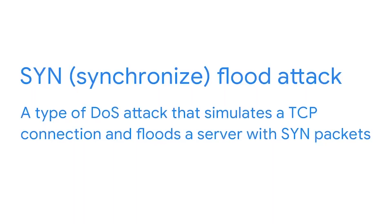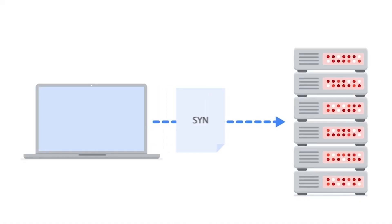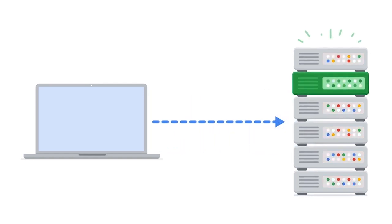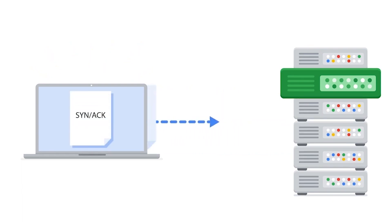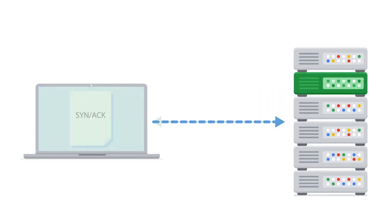Let's discuss three common network-level DOS attacks. The first is called a SYN flood attack. A SYN flood attack is a type of DOS attack that simulates the TCP connection and floods a server with SYN packets. The first step in the handshake is for the device to send a SYN, or synchronize, request to the server. Then the server responds with a SYN-ACK packet to acknowledge the receipt of the device's request and leaves a port open for the final step of the handshake. Once the server receives the final ACK packet from the device, a TCP connection is established.